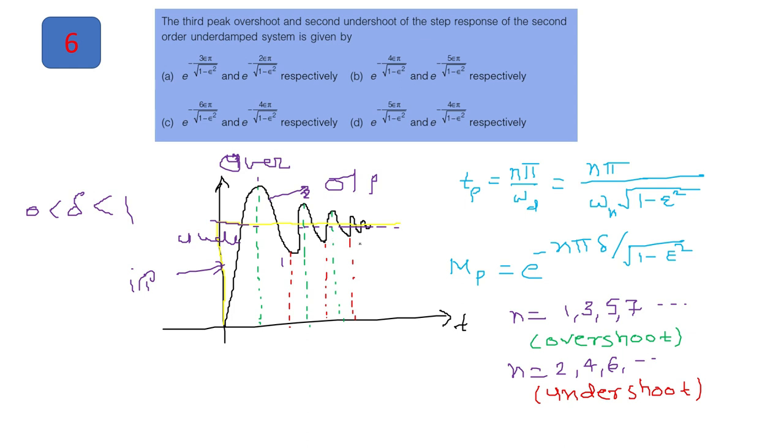Now, question asked is about the peak overshoot and second undershoot. So this is general formula for finding the maximum peak. Where n can vary accordingly. If n is odd number, we are having an overshoot. For n even number, we are having an undershoot. So what do we need to find out? Third peak overshoot. For third peak overshoot, the value of n should be 5. So you will put n equals to 5 over here. And next is second undershoot. Second undershoot is for n equals to 4. So you will put here 4. So whichever option having these two expressions. So you can see from here option D is correct. Because you are having 5 and 4. So this is the expression. Sometime it is also written as a damping ratio. So you can change accordingly the given options.